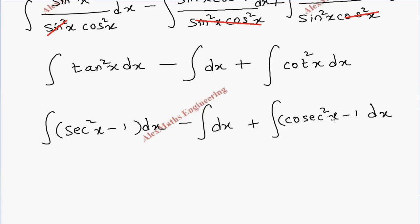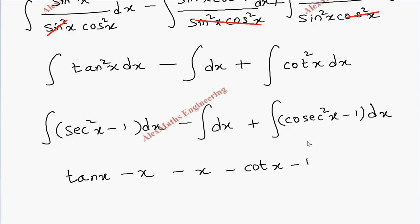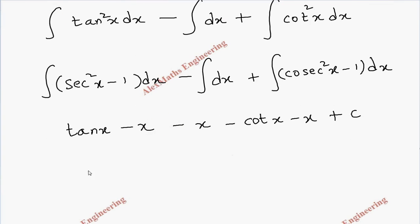After applying the integration formulas: the integral of sec²x is tan x, giving minus x for the −1 term; the second term is minus x; and the integral of cosec²x is minus cot x, giving another minus x for the −1 term. So the final answer is tan x minus cot x minus 3x plus C.